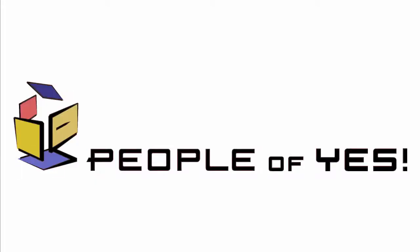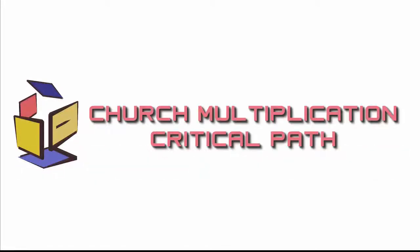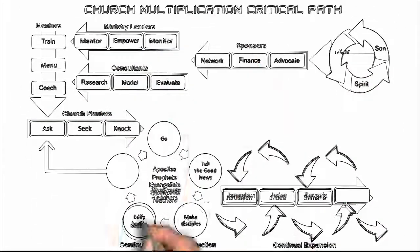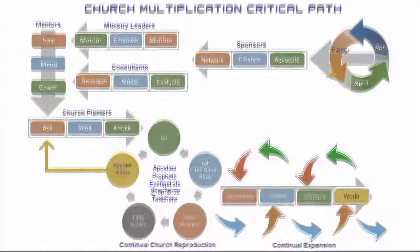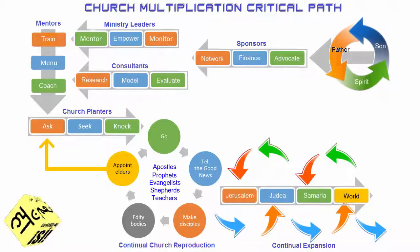People of Yes. Church Multiplication Critical Path. We shall examine a typical church multiplication process that consists of 10 parts.